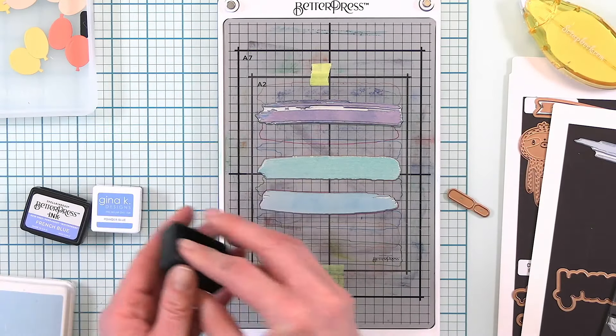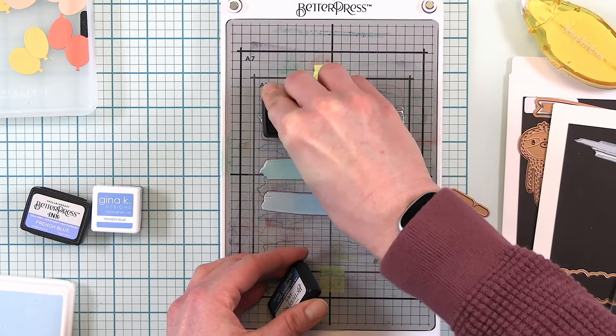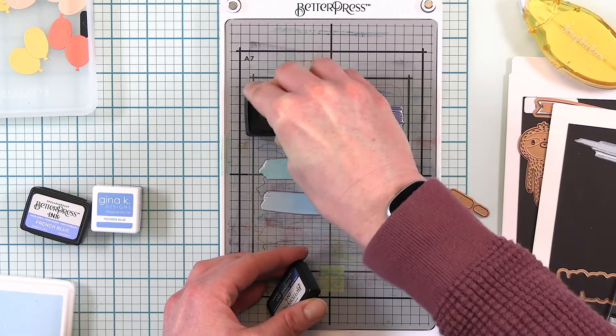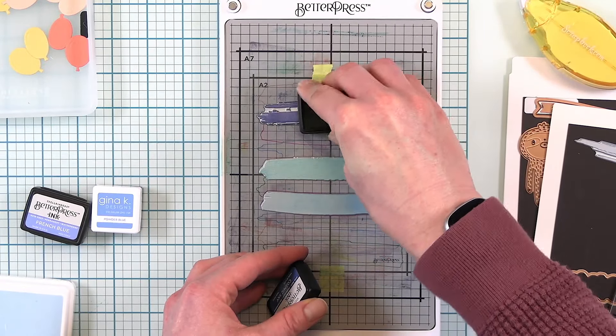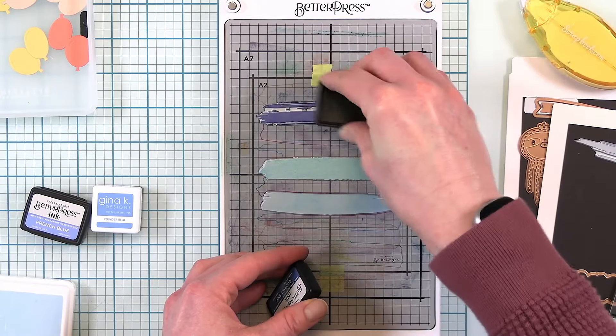Next I'm using the Spellbinders Better Press ink and this one is better to kind of pounce and move around on the plate like so. This one has like a linen applicator so it doesn't go on the same way as the Concord and 9th ink.